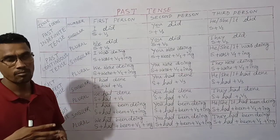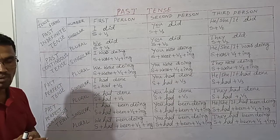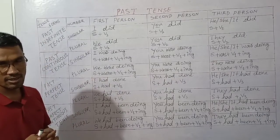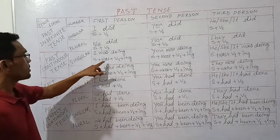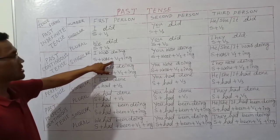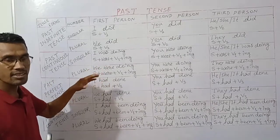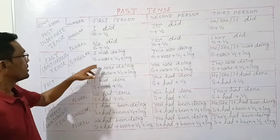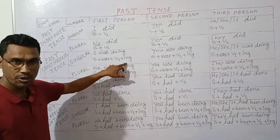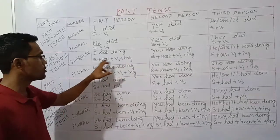For first person singular in past continuous tense: subject plus 'was' plus verb first form plus '-ing.' For example: 'I was doing my homework.' The structure is: subject plus 'was' plus verb first form plus '-ing' plus object — 'I was doing my homework.'